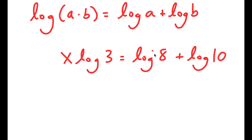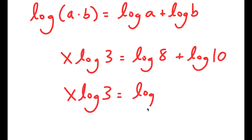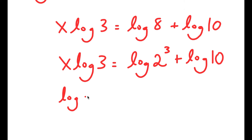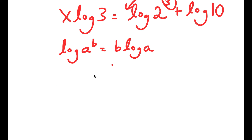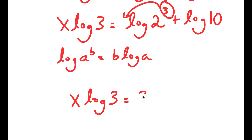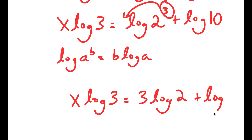Now, log of 8 is the same thing as log of 2 to the power of 3. I can go back to using the property log a to the power of b equals b times log a. So I can move 3 to the front, and now I get x times log 3 is equal to 3 times log 2 plus log 10.